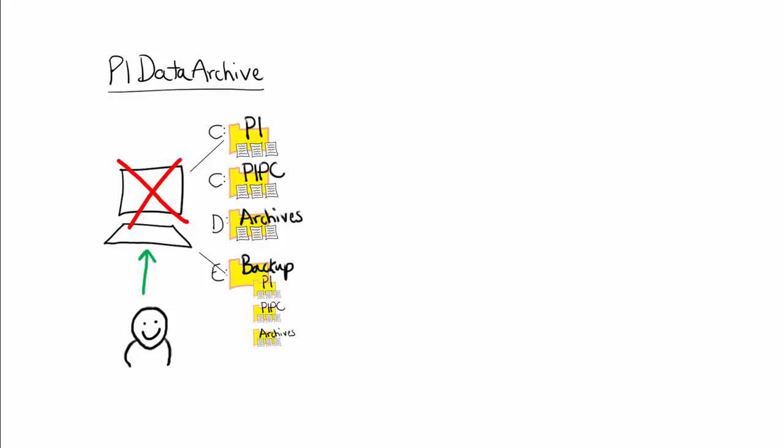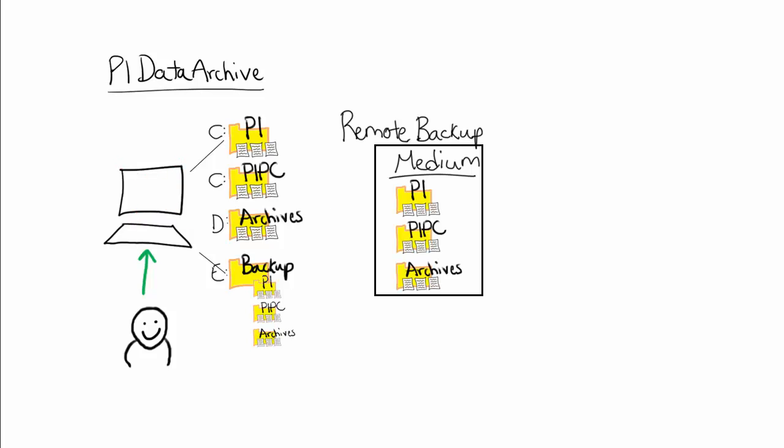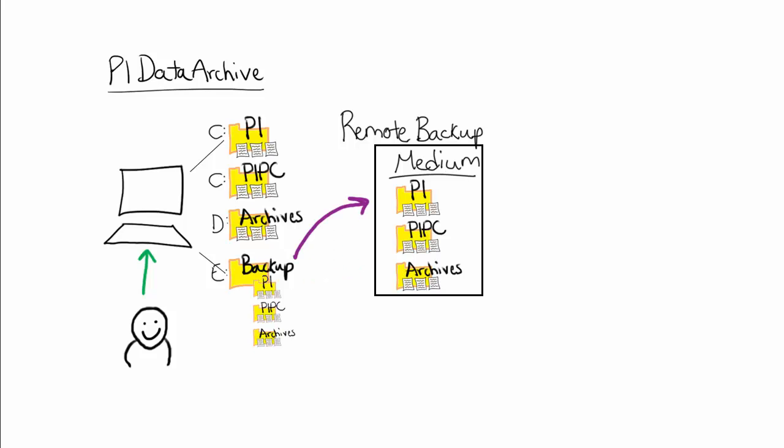This can be done on a remote medium, such as another computer, disk, or any other storage device. We recommend you work with your IT department to include this local backup directory as part of your full backup strategy. However, if your IT department is unavailable to help with this, there is a script included with your PI Data Archive installation that can be configured to perform the remote backup as well.